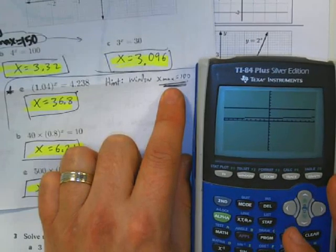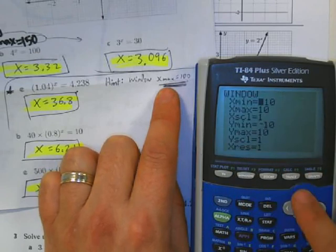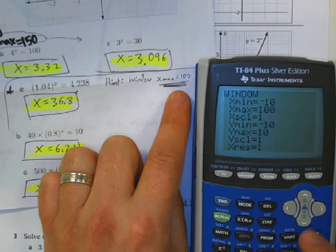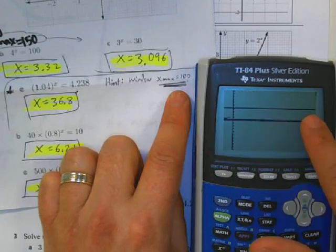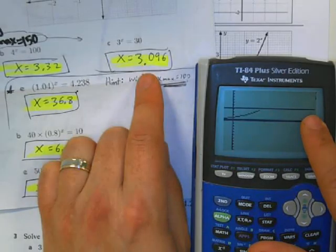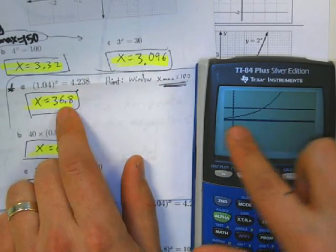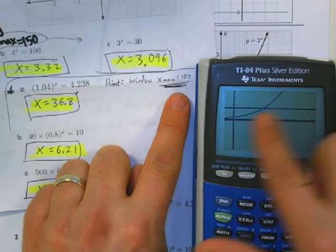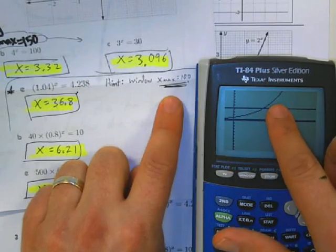So, I'm going to hit window, and I'm going to change the x max. Let's change it to 100 and just see what happens. So, if I change the x max, now, here's my horizontal line at 4.238, and here's my curve. Now, I can see more of the curve, because I changed the x max to 100 for question E.